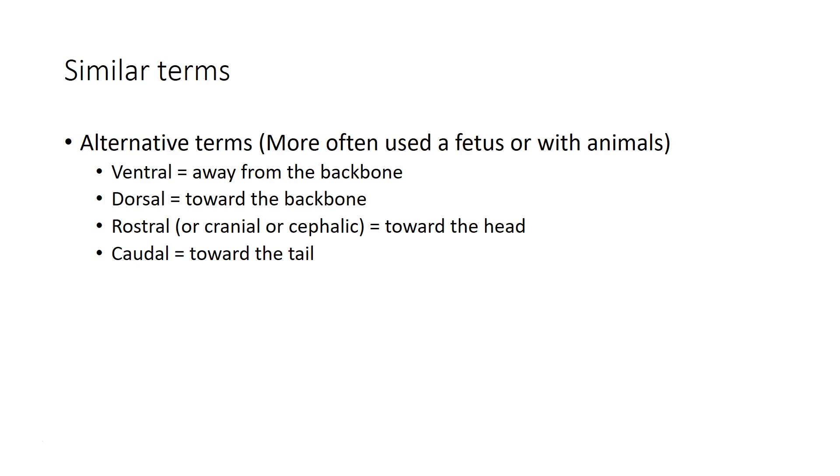There are some alternative terms that are used that are similar to these more often with a fetus or with animals where the standing erect upright anatomical position isn't so typical. The term ventral used for things away from the backbone and dorsal for things toward the backbone, rostral or cranial or cephalic for things toward the head and caudal for things that are toward the tail.